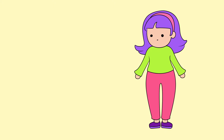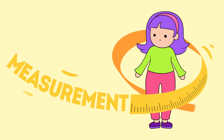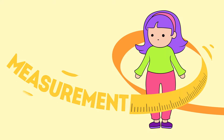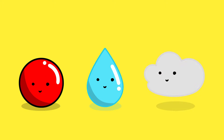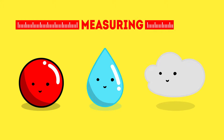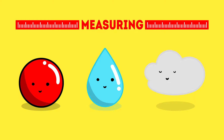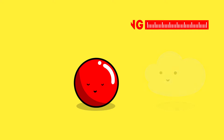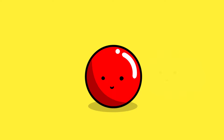Hi kids! Let's talk about measurement. Because matter comes in solid, liquid, and gas, and each have different characteristics, there are also different ways of measuring them. This time, we'll first measure solid objects.